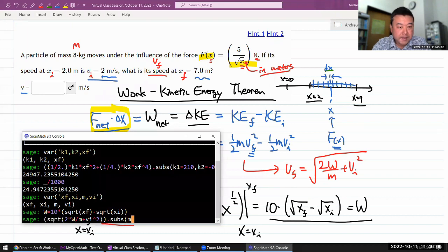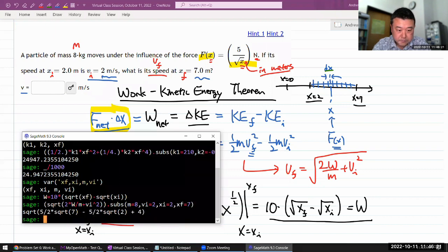So, mass of 8 kilograms, v-initial of 2 meter per second, x-initial of 2 meters, x-final of 7 meters. Look at all the numbers. I'm going to put this through a numerical.